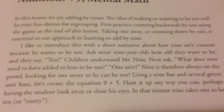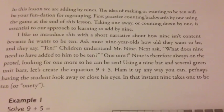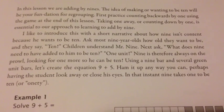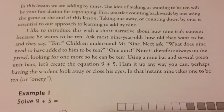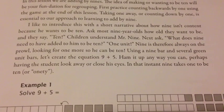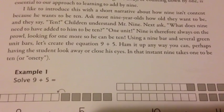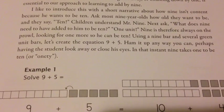For example, it says: 'I like to introduce this with a short narrative about how 9 isn't content because he wants to be 10.' As most 9-year-olds, children understand — Mr. 9-ness asks, what does 9 need to have added to him to be 10? One unit. 9 is therefore always on the prowl, looking for one more so he can be 10. Using a 9 bar and several green unit bars, let's create the equation 9 plus 5.